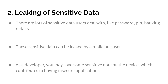The second security threat is leaking of sensitive data. Nowadays there are lots of sensitive data users deal with — for example, passwords, PIN, banking details. This sensitive data can be leaked by a malicious user. Also on your side as a developer, you may save some sensitive data on the device for your application to run properly, and this also contributes to having insecure applications.